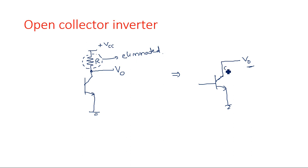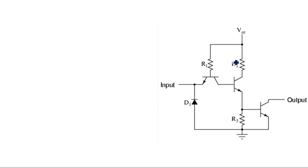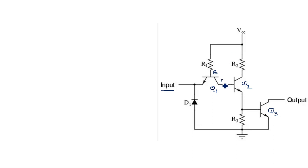Now let us see how this open collector will help us create an inverter. In the open collector inverter, whatever input you give — either 0 or 1 — it will be inverted at the output. Let us name the transistors Q1, Q2, and Q3. The first transistor Q1 is connected such that its base terminal is connected to VCC and its collector terminal is connected to the base of transistor Q2, while the emitter terminal receives the input.